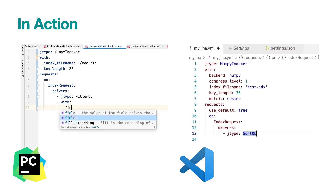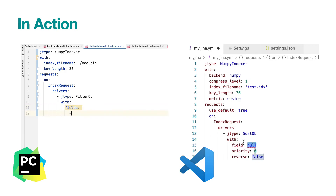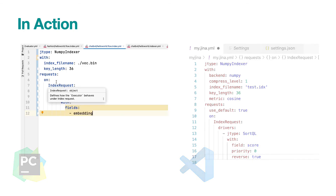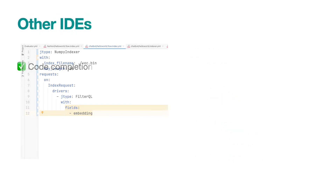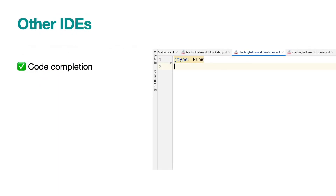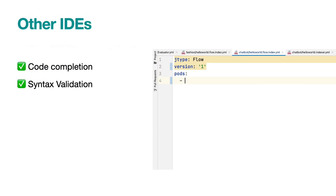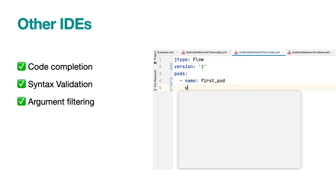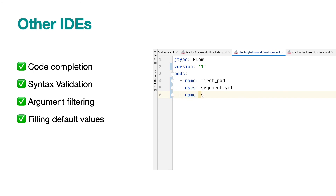Besides PyCharm and VS Code, most mainstream IDEs also support JSON schema — you can configure it manually. The actual user experience may slightly vary depending on your IDE or plugin. In general, our schema file enables code completion, syntax validation, argument filtering, filling default values, and displaying help text.